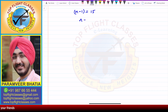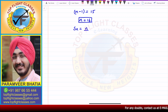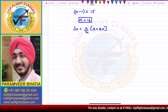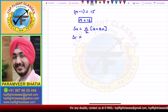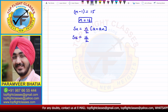So N comes out to be 15 plus 1, which is 16. Now if we write the Sum of N Terms formula, that is S of N is equal to N by 2 times A plus An. Now here we have N equal to 16, so S of N will be equal to 16 by 2 times A.